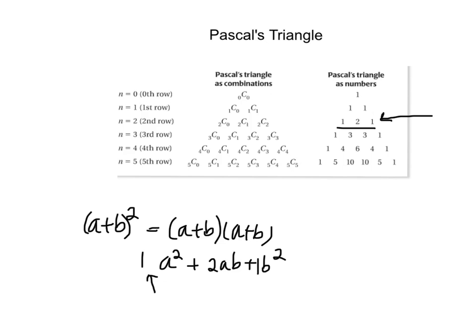So, accordingly, if we were to cube A plus B, our coefficients would be 1, 3, 3, 1. So, we would have A cubed plus 3A squared B plus 3AB squared plus B cubed.